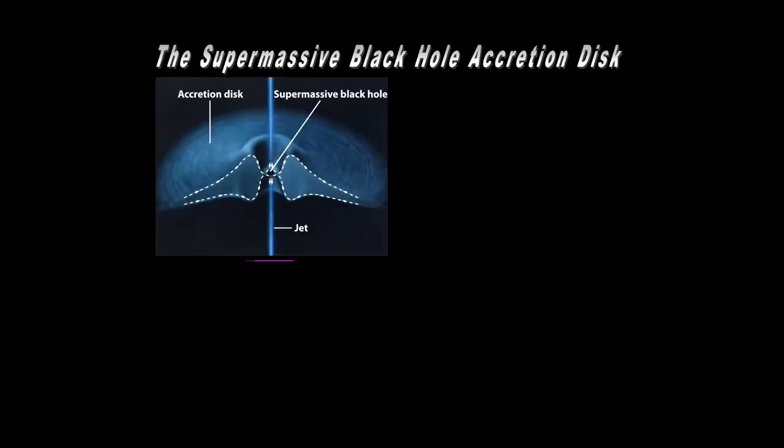So accretion disks and supermassive black holes both seem to be part of the active galactic nuclei recipe. So what about the supermassive black hole accretion disk? Here's a drawing of one in relatively simple form to get the basic idea as to the currently understood mechanism by which it can produce the high-energy lobes, the jets, the bipolar outflows. Here the disk is about 15 astronomical units, real close to the supermassive black hole itself.